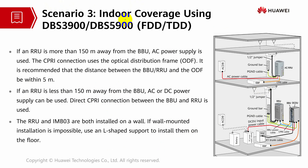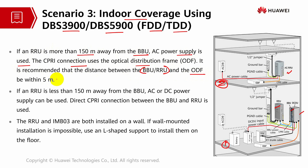Scenario 3 is an indoor coverage solution using DBS 3900 series or DBS 5900 series, applicable for both FDD and TDD modes. The setup includes RRU, BBU, and DC DU with AC RRU connections. If the RRU is more than 150 meters away from the BBU, AC power supply is used and the CPRI connection uses an ODF (optical distribution frame). The recommended distance between BBU, RRU, and ODF is within 5 meters. If the RRU is less than 150 meters from the BBU, AC or DC power can be used with a direct CPRI connection.